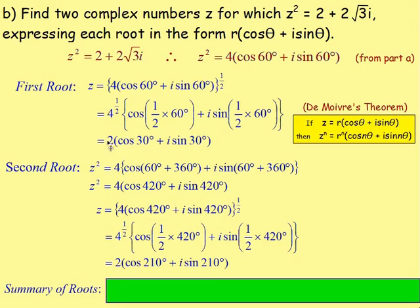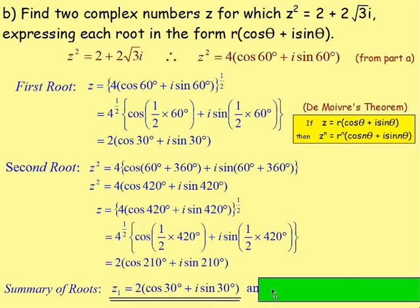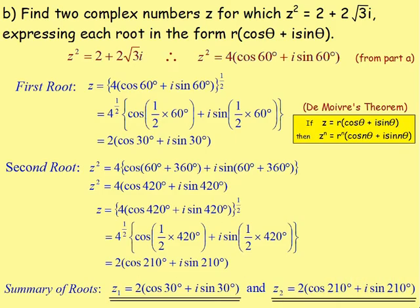So the two roots are: 2(cos30 + i·sin30) and 2(cos210 + i·sin210). We get two answers because we're working out the square root, and a square root gives two answers.